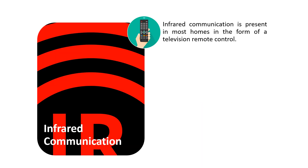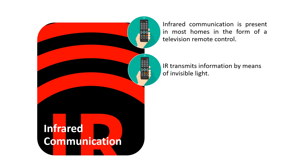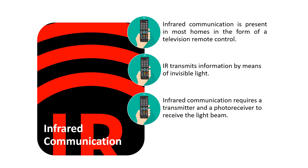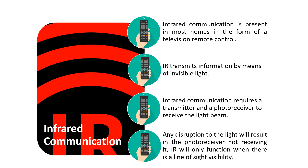The next type is infrared communication. Infrared communication is present in most homes in the form of a television remote control. This IR transmits information by means of invisible light. Infrared communication requires a transmitter and a photo receiver to receive the light beam. Any disruption to the light will lead to the photo receiver not receiving it. IR will only function when there is a line-of-sight visibility.